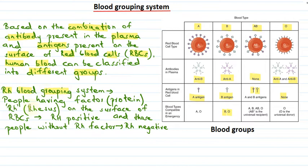We also talked about the RH blood group. People who have the RH protein factor on the surface of their RBCs are called RH positive, and those who lack this RH factor are called RH negative. During blood transfusion, if an RH negative person receives blood from an RH positive person, their body will develop antibodies against RH, leading to adverse medical conditions. So it is very important to check the compatibility of different blood groups when performing blood transfusion.